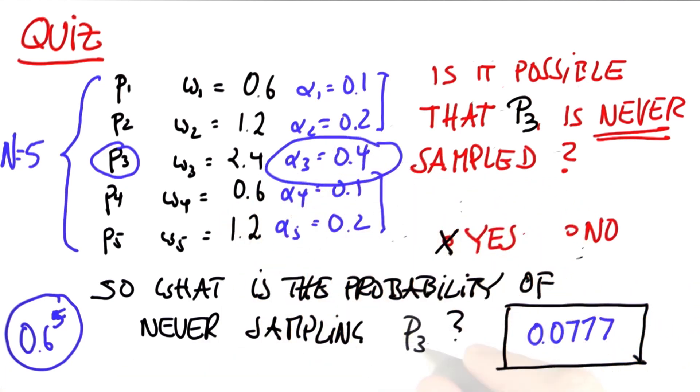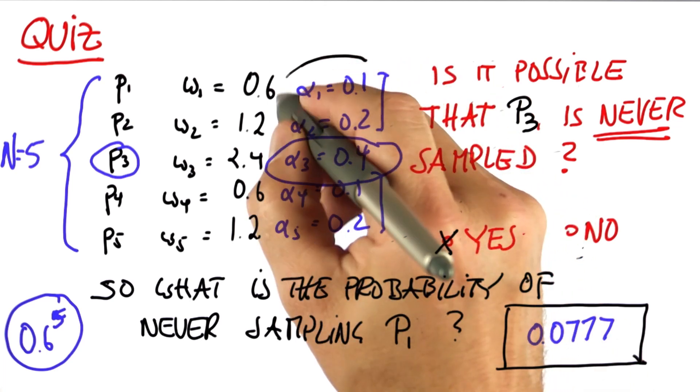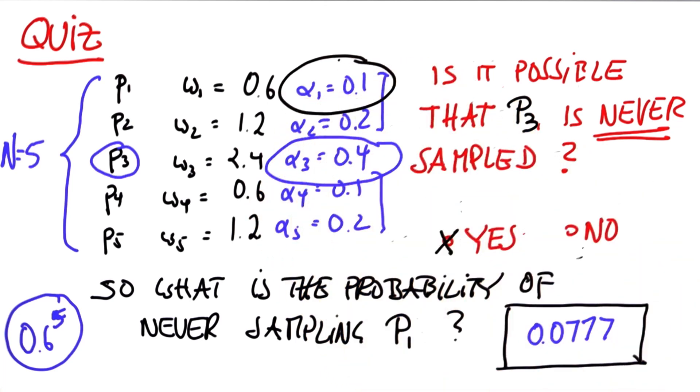If we had, instead of P3, gone for P1 over here, which has a much smaller probability of being drawn, then the 0.07 will be as large as 0.59, which is 0.9 to the fifth.